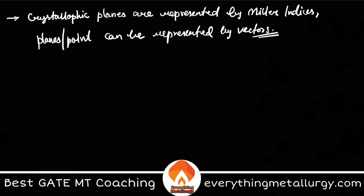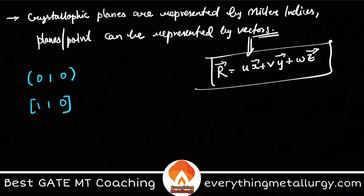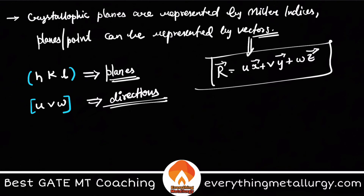For a direction, you can write a position vector as R = u·a̅ + v·b̅ + w·c̅. Now about the bracket notation I used — writing (0 1 0) as a plane and [1 1 0] as a direction: the round brackets, or parentheses, are used for denoting planes and are written in terms of h, k, l. The square brackets are used for directions, written in terms of u, v, w.